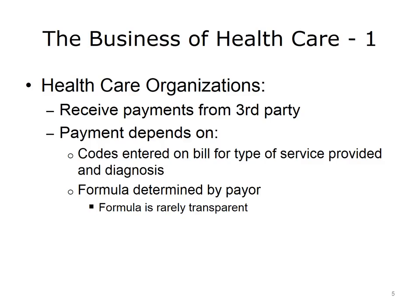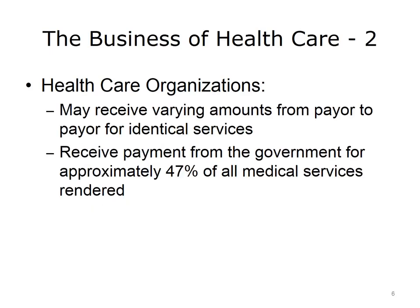Second, the amount paid or reimbursed by an insurance plan depends entirely on codes entered on the bill or claim that indicate the type of service provided and the reason or diagnosis for the service, and a formula determined by the payer. This formula for payment frequently is not transparent. Third, payment amounts received for identical services may vary within a payer and from payer to payer. And fourth, healthcare organizations depend on payment from the government for approximately half of all healthcare expenses in the U.S.